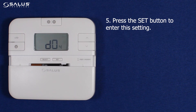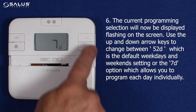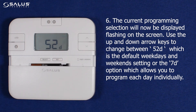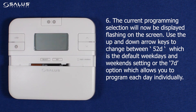Step 5: Press the set button to enter this setting. Step 6: The current programming selection will now be displayed flashing on the screen. Use the up and down arrow keys to change between 5-2D, which is the default weekdays and weekend setting, or the 7D option, which allows you to program each day individually.